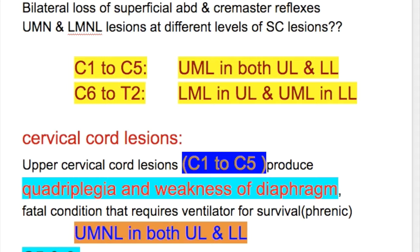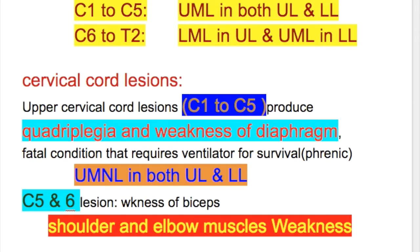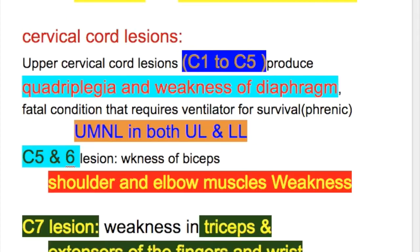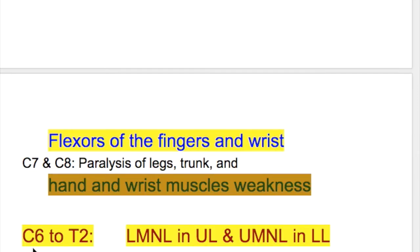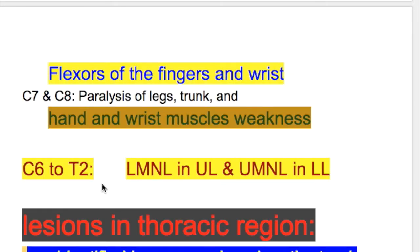Cervical 5 and 6 lesion produces weakness of the biceps, shoulder, and elbow muscles. A lesion at cervical 7 produces weakness in the triceps and extensors of the finger and wrist. Cervical 6 to thoracic 2 lesion produces lower motor neuron lesion in the upper limb and upper motor neuron lesion in the lower limb.